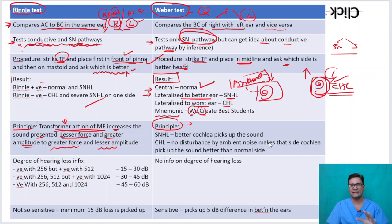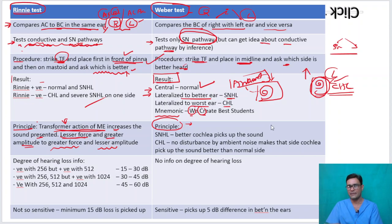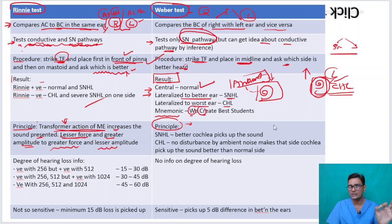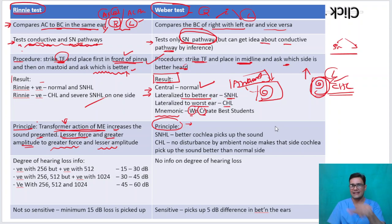Basically, the better cochlea picks up the sound. In sensorineural hearing loss on the right side, the left is the better cochlea — so Weber is lateralized to the opposite ear. In conductive hearing loss on the right side, the ambient noise is not disturbing the cochlea on the right side, so that becomes the better cochlea, and Weber is lateralized to the right ear.